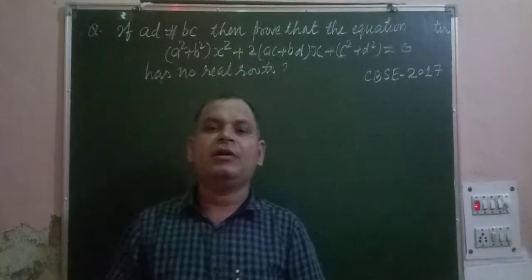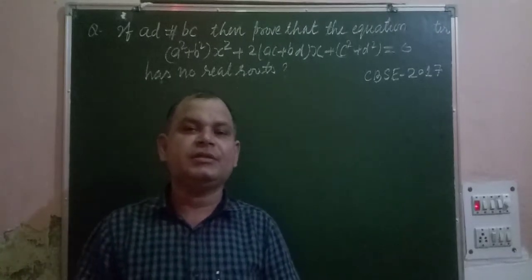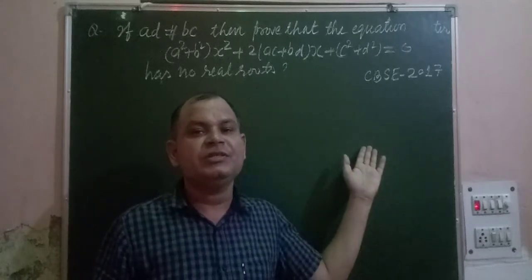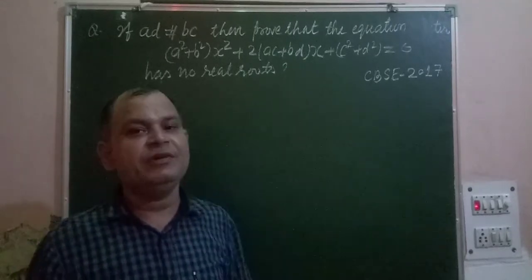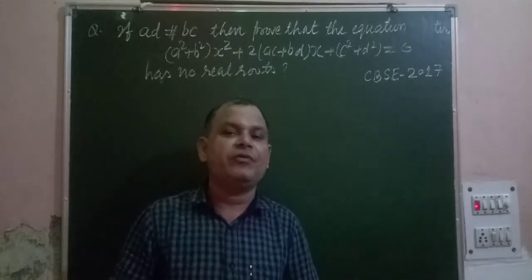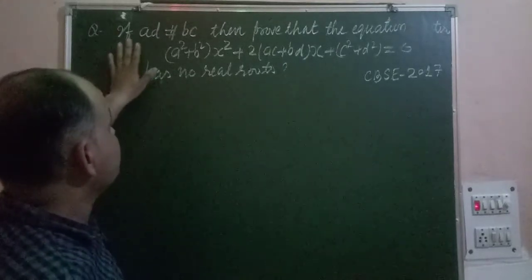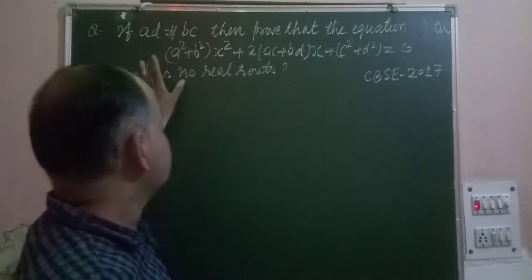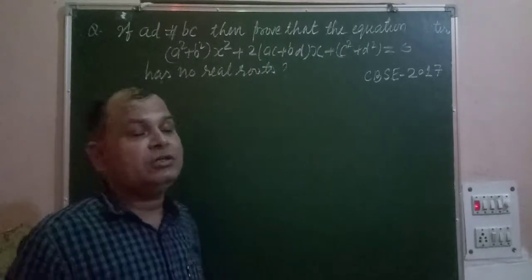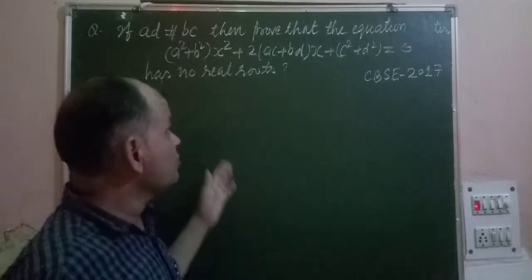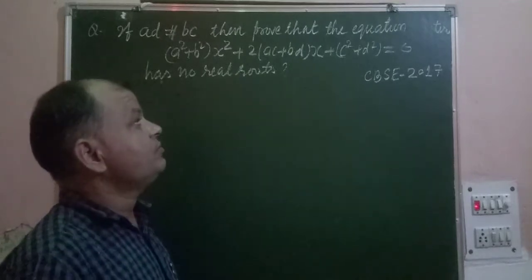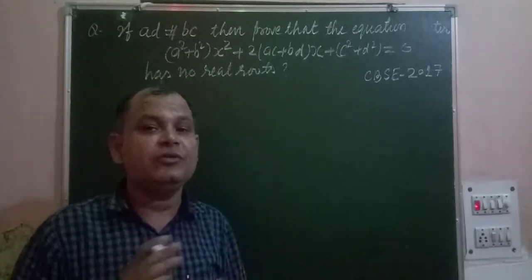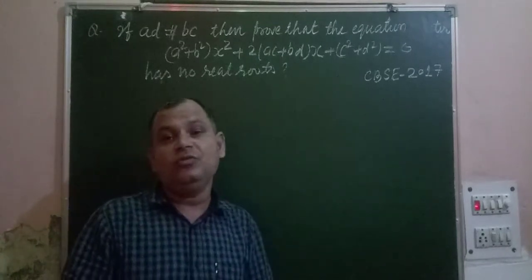Hello friends, a warm welcome to CVSC Class 10 Maths Solution Series. Here is a question from the CVSC Board Exam 2017, related to coordinate equations. The question says: if AD does not equal BC, then prove that the equation (A² + B²)X² + 2(AC + BD)X + (C² + D²) = 0 has no real roots.